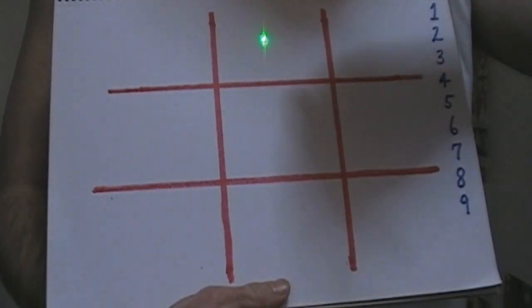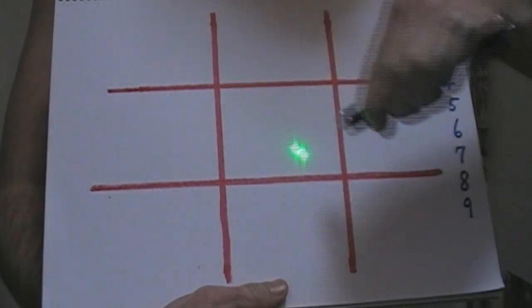Also going down, they'll add up to 15. Okay, and diagonal as well, they'll add up to 15.